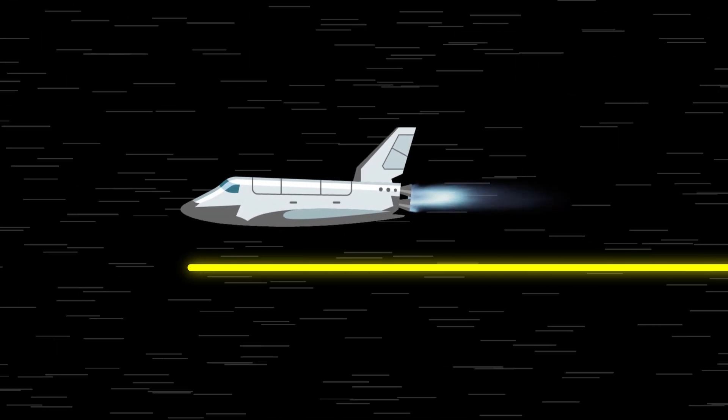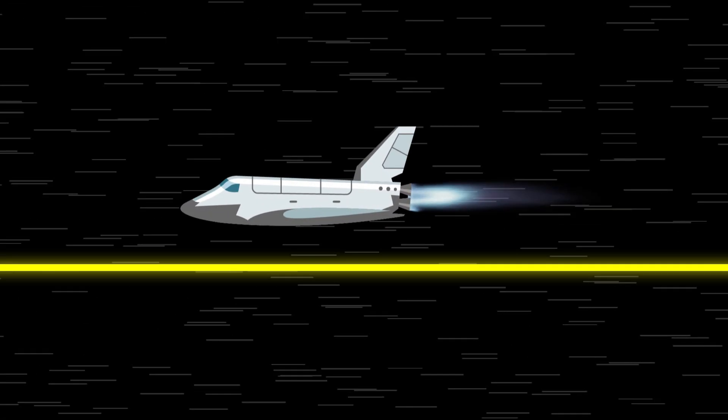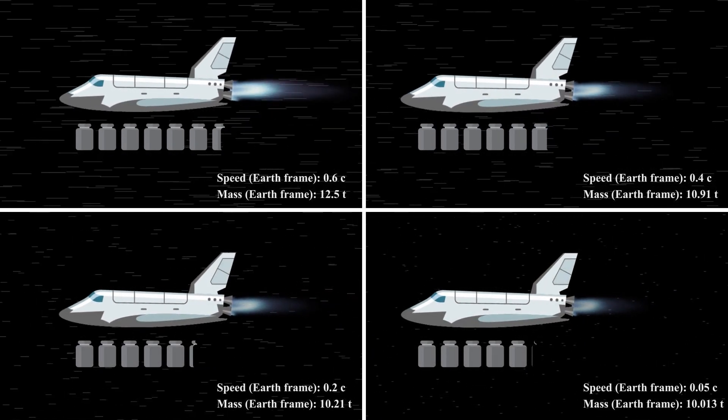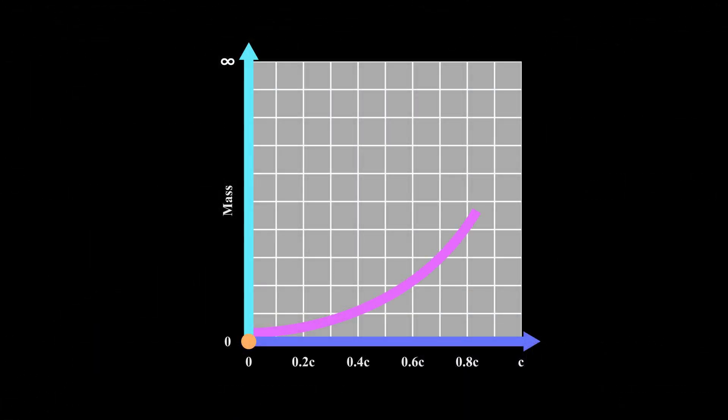As the spaceship's speed increases, it becomes progressively harder to accelerate further due to the phenomenon of relativistic mass increase. An object's mass effectively grows as its speed approaches the speed of light. The heavier an object becomes, the more energy is required to accelerate it.